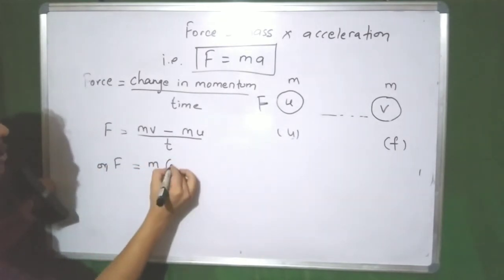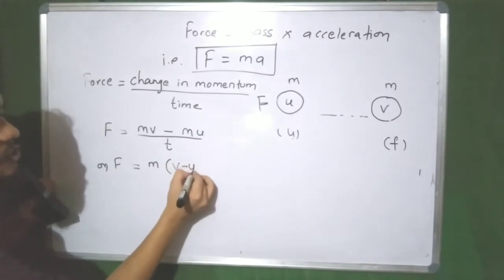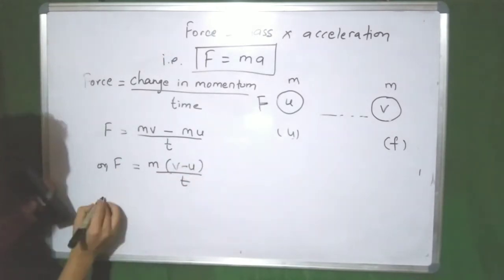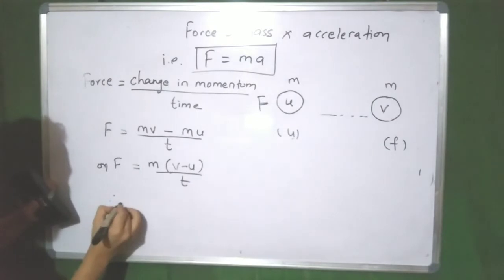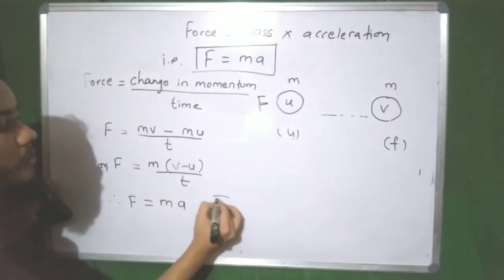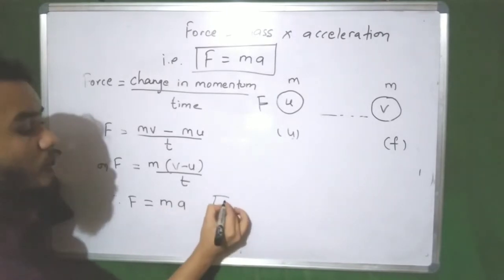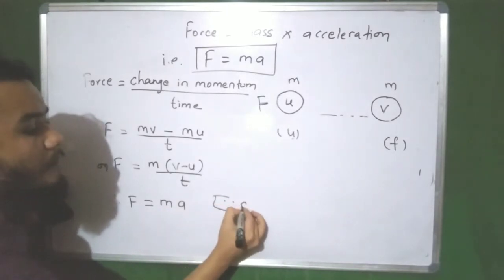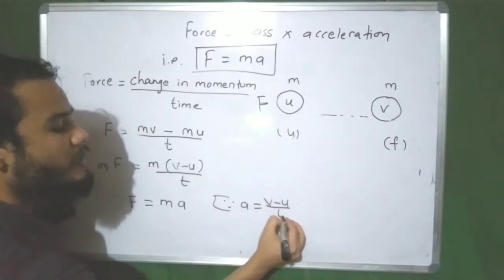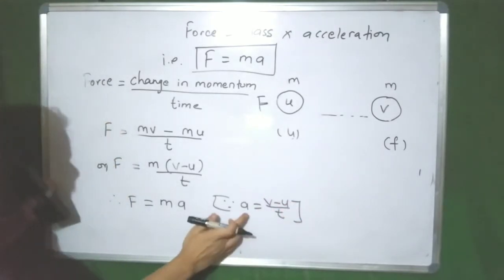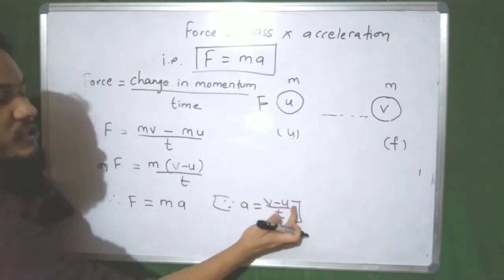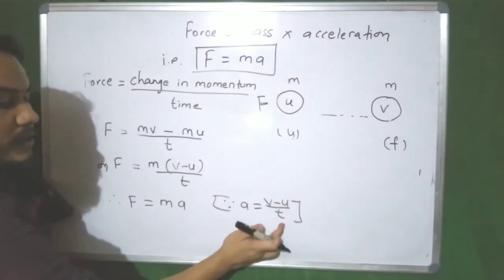Dividing by time t, we can write F is equal to m times (v minus u) divided by t. Therefore F is equal to ma, because acceleration is equal to (v minus u) divided by time taken — that means acceleration equals final velocity minus initial velocity divided by time taken, from the definition of acceleration.